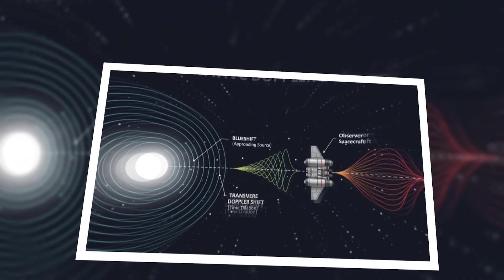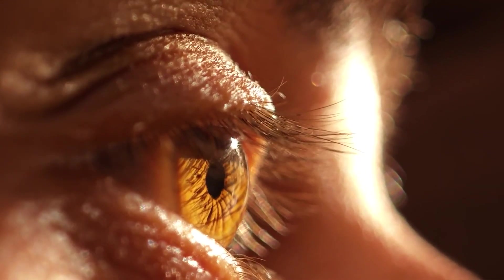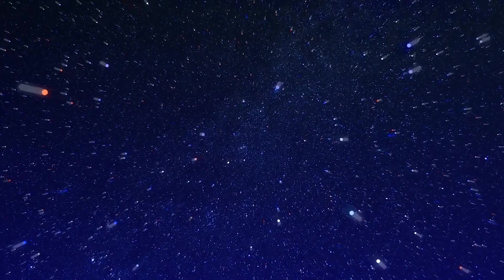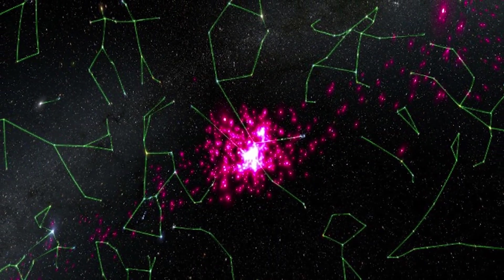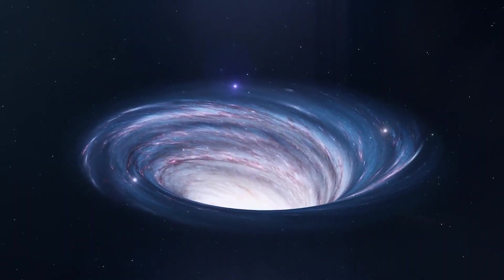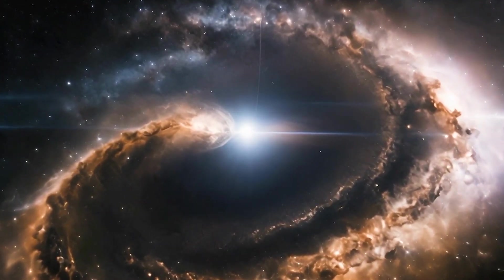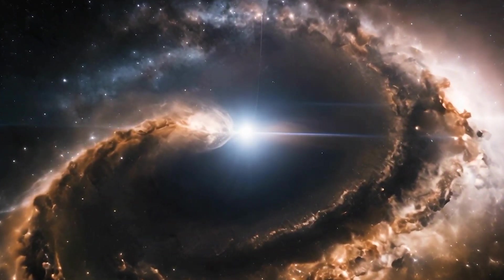This is called the relativistic Doppler effect. At the same time, your entire field of vision begins to shrink. Instead of seeing stars all around you, your view narrows into a bright tunnel directly in front of the ship. It's called relativistic aberration. Space seems to collapse into a narrow cone. The universe stretches and folds around you, as if you're flying into a funnel of light.